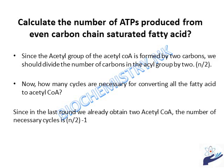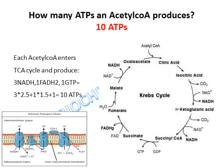To calculate the number of ATPs produced from an even-carbon-chain saturated fatty acid: first, divide the number of carbons by two to get the number of acetyl-CoA molecules. Then, multiply by the ATPs produced per acetyl-CoA in the citric acid cycle and electron transport chain. Also calculate the number of beta-oxidation cycles, which is N/2 minus 1, since the last round already yields two acetyl-CoA.